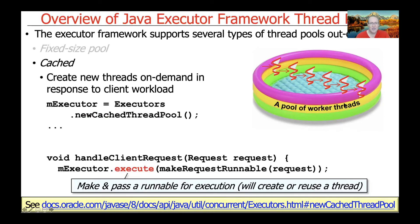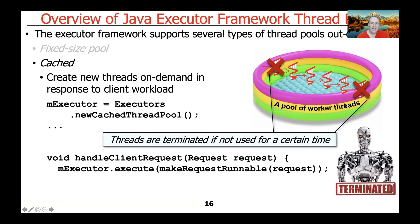When a request comes in and you call execute with a runnable, it first checks if there are any available threads created for earlier requests that are still around and idle — if so, it reuses those threads. If there are no available threads, it creates a new one. Created threads are sticky and live for one minute by default; if they're not used within that minute, they're terminated, but if reused within that window, their expiration time is reset.